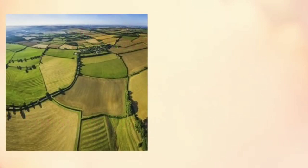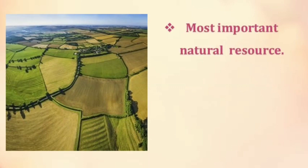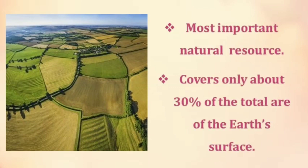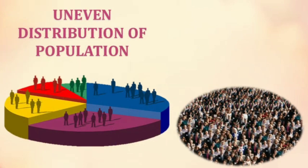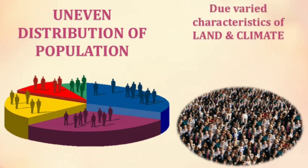Land is among the most important natural resources. It covers only about 30% of the total area of the earth's surface, and all parts of this small percentage are not habitable. The uneven distribution of population in different parts of the world is mainly due to varied characteristics of land and climate.